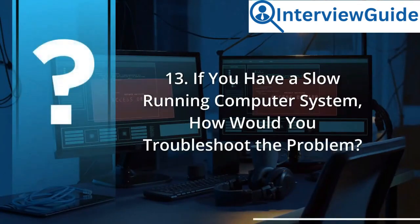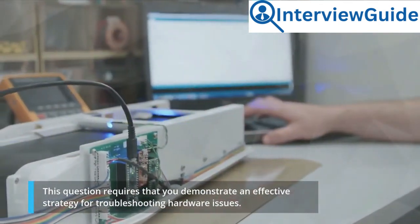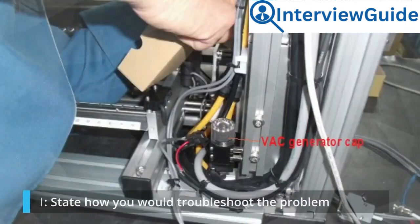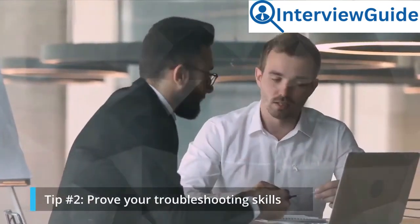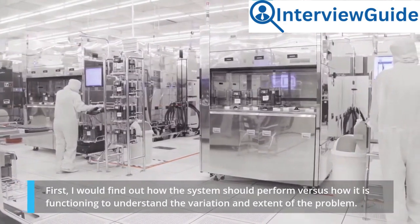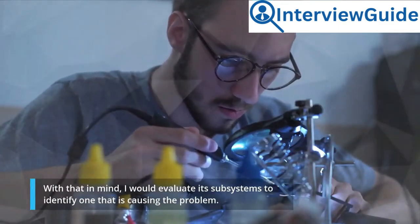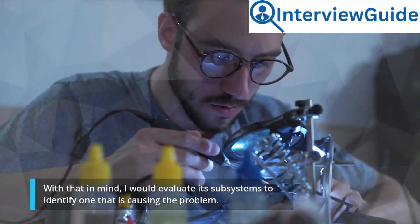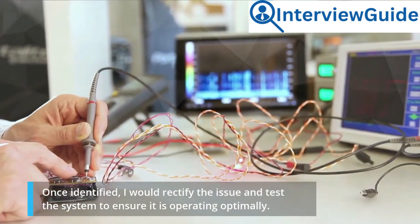Question 13: If you have a slow running computer system, how would you troubleshoot the problem? This question requires that you demonstrate an effective strategy for troubleshooting hardware issues. Tip number 1: state how you would troubleshoot the problem. Tip number 2: prove your troubleshooting skills. Sample answer: First, I would find out how the system should perform versus how it is functioning to understand the variation and extent of the problem. With that in mind, I would evaluate its subsystems to identify one that is causing the problem. Once identified, I would rectify the issue and test the system to ensure it is operating optimally.